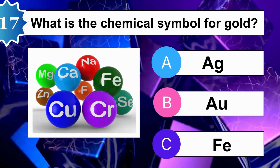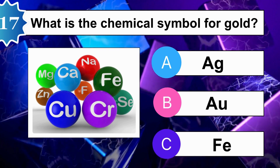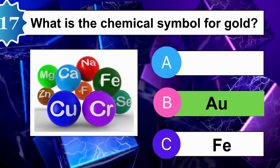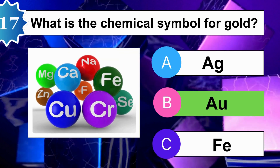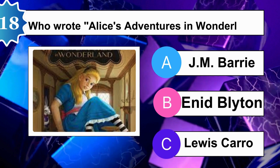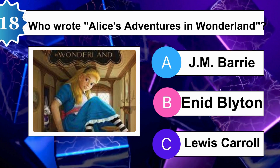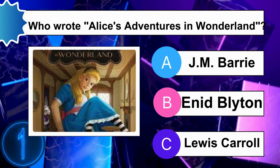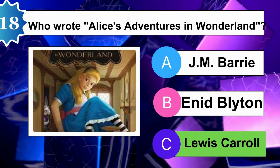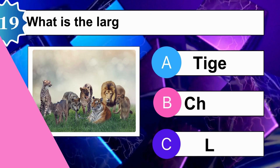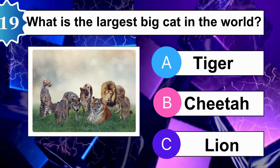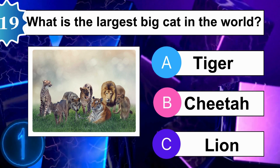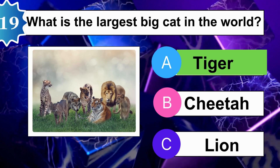What is the chemical symbol for gold? B is correct. Who wrote Alice's Adventures in Wonderland? What is the largest big cat in the world? A is correct.